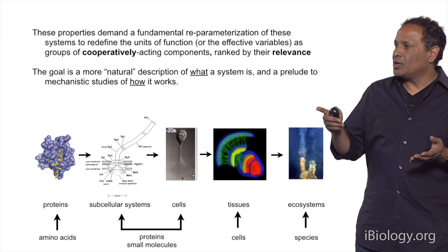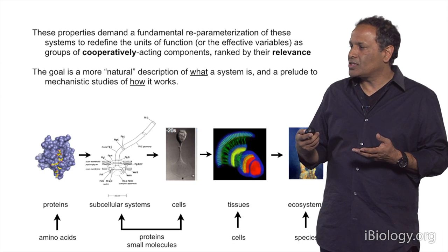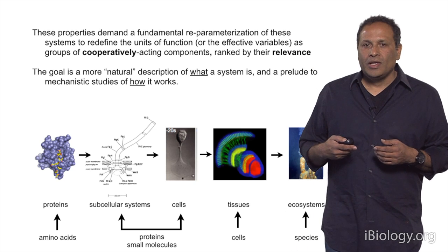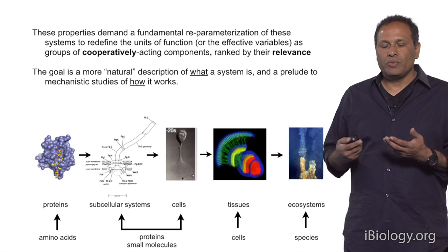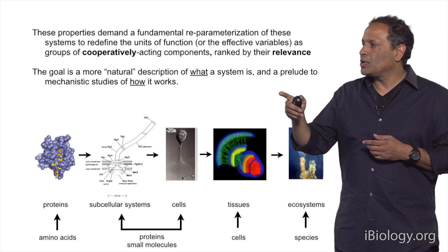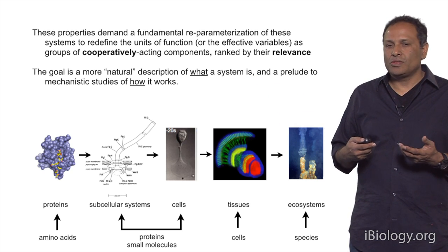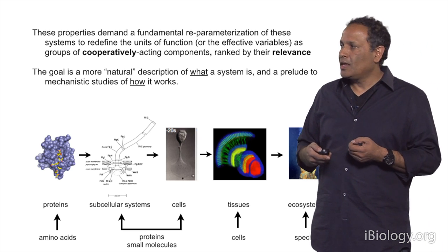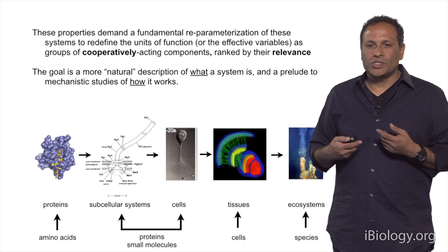The goal in doing this is to provide a more natural description of what a system is. It may be intuitive to think about a protein as made up of amino acids, but in terms of function, groups of amino acids that work cooperatively may be a better natural description. Solving this problem — providing a more natural description — should be a necessary prelude to mechanistic studies. Understanding how a system works may be simpler if we first understand the effective variables that make it up.